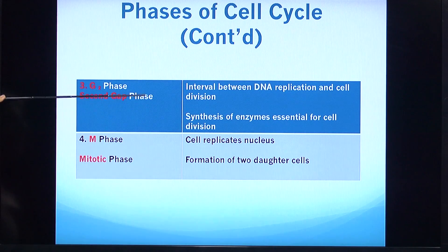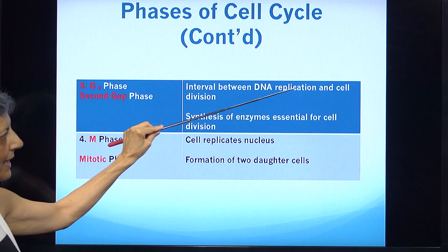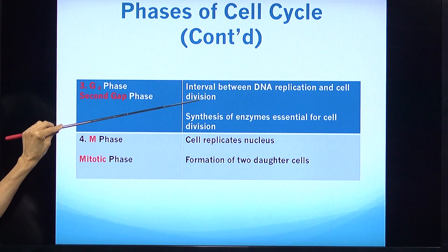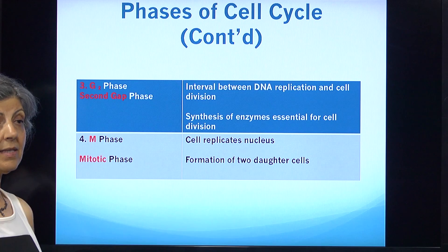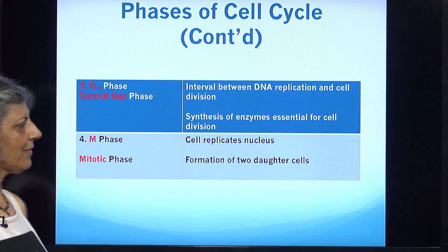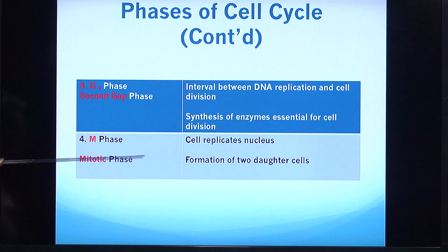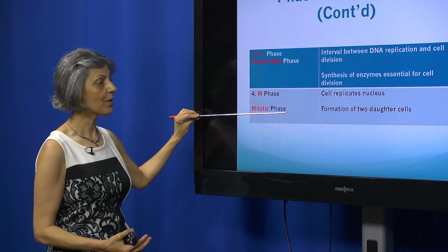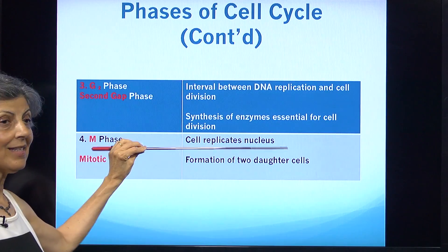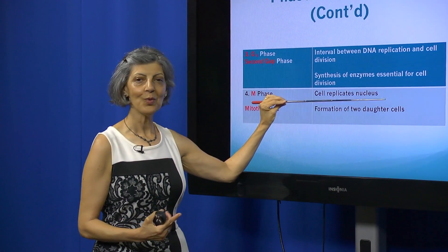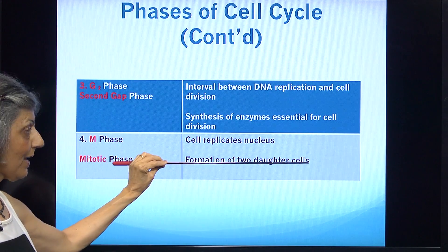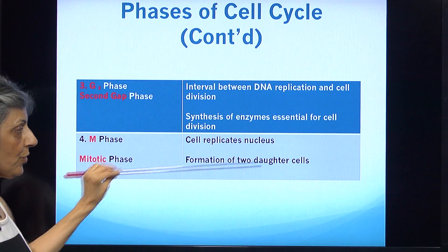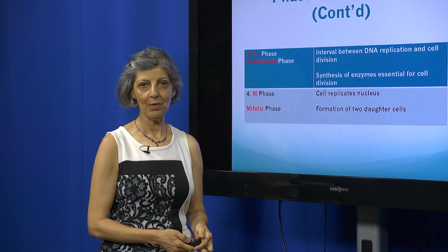The third phase is G2, the second gap. This is after the DNA has replicated and the cell is not yet dividing. It is getting ready by making all the enzymes important for cell division. The M phase is the actual mitotic phase, where the cell will divide into two. Instead of one nucleus, we will have two nuclei, and the cytoplasm will divide to form two daughter cells.